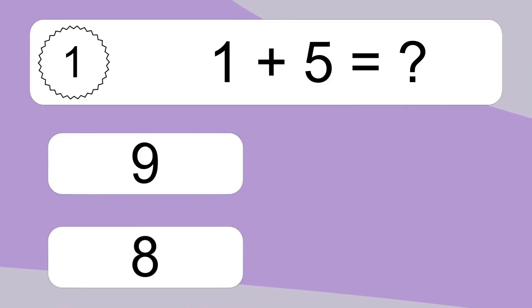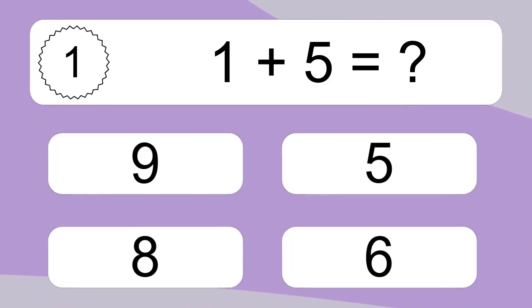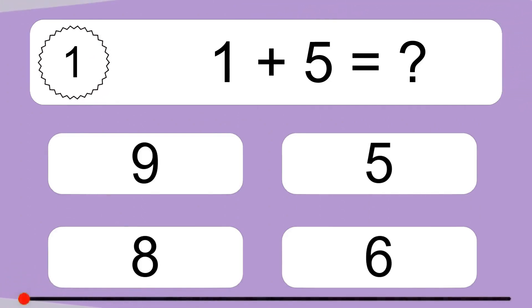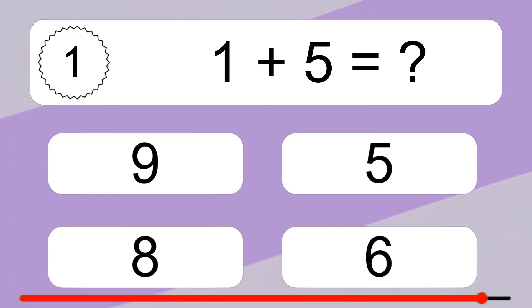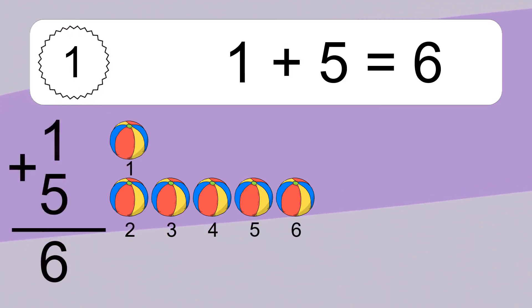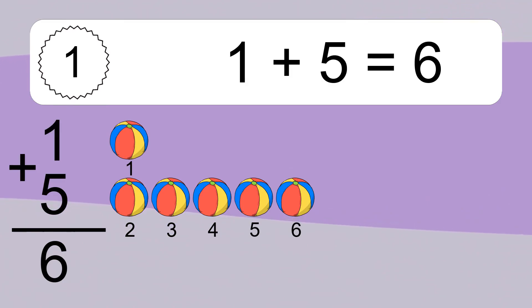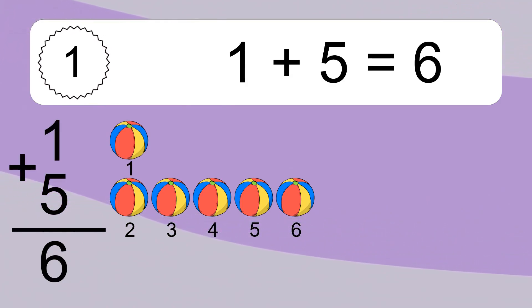1 plus 5 equals what? 1 plus 5 equals 6. Let's count it. 1, 2, 3, 4, 5, 6.